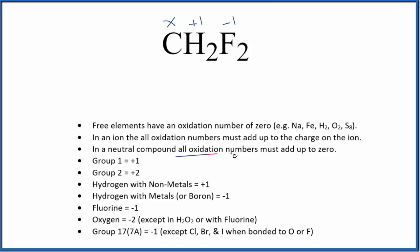All of these numbers add up to zero since we have a neutral compound. So we can set up an equation: X plus one times two, minus one times two, equals zero. So we have X plus two minus two. So X equals zero.